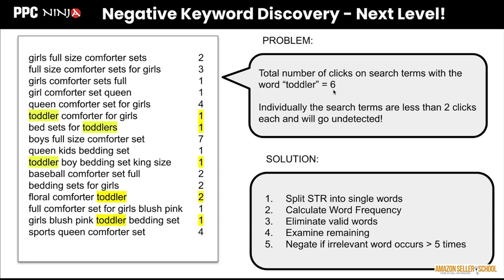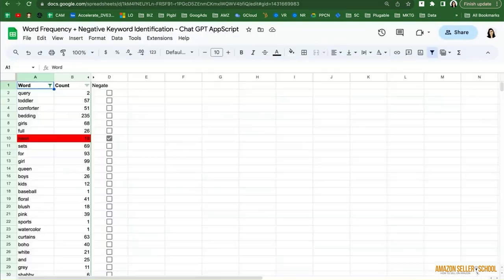You'll be able to see that the word 'toddler' actually appears six times in your entire list. If you sort this list descending by frequency — how many times a word is appearing — you can visually spot the ones that are not good for you. Clearly 'toddler' is not a word you want, or if 'neon' appears five times and you don't sell a neon product, you can safely negate those words at scale.